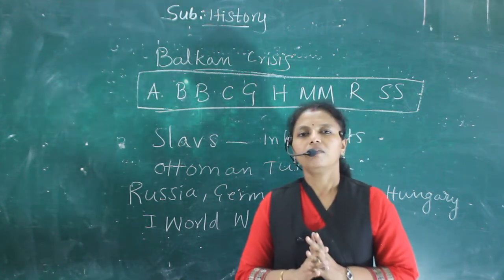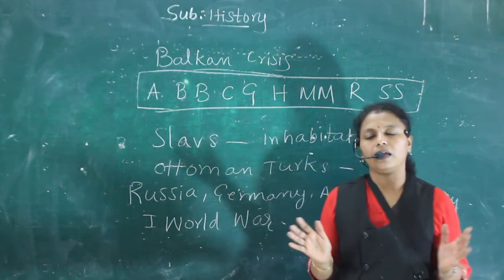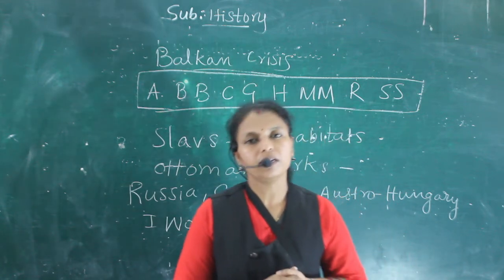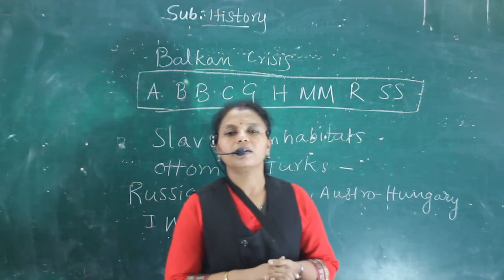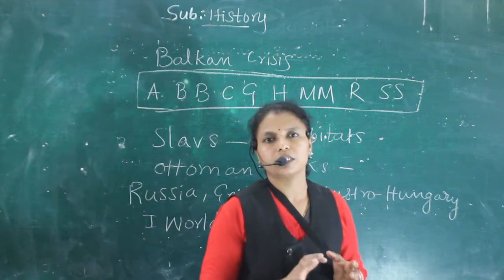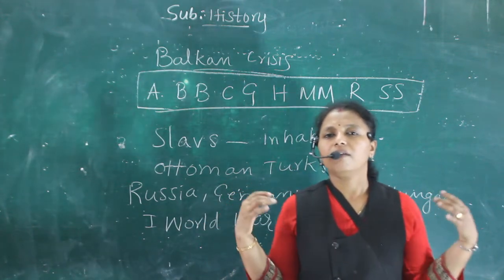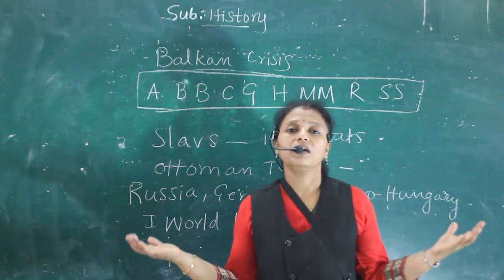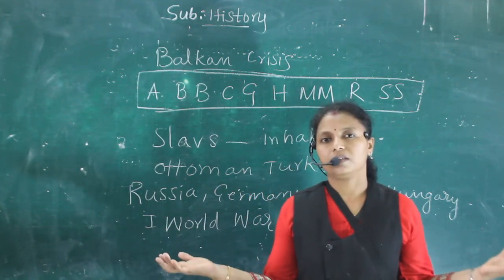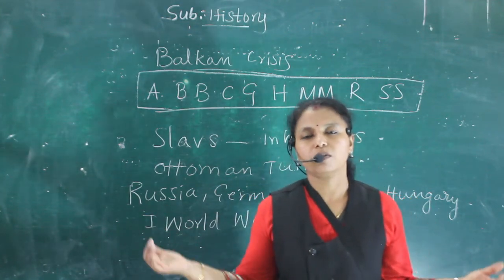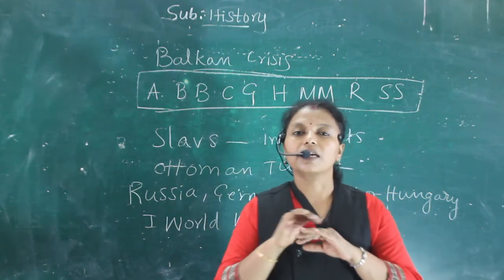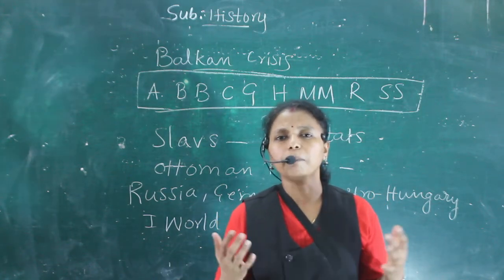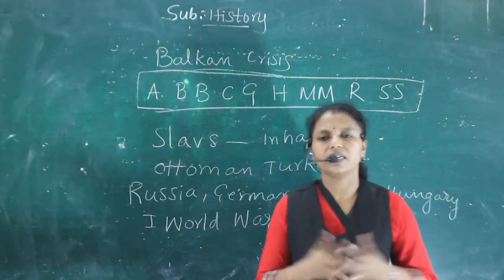So this is how we have learnt about the Balkan crisis. This is simply the Balkan crisis in world history. This is part of the lesson on nationalism in Europe. These are the important topics that we have learned in this lesson.